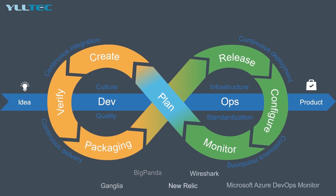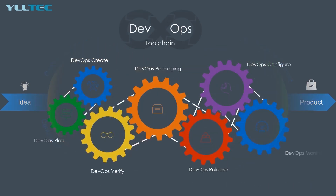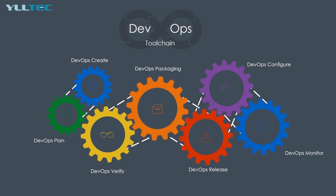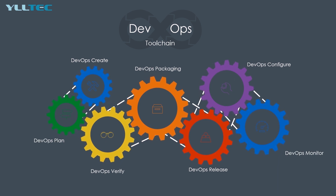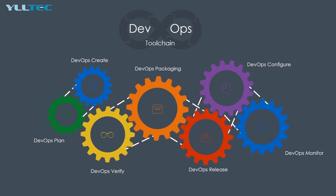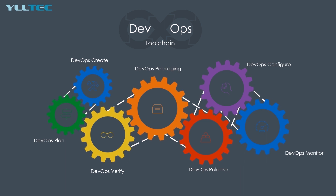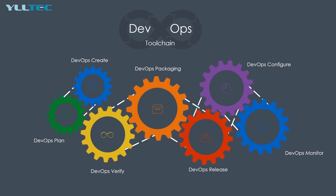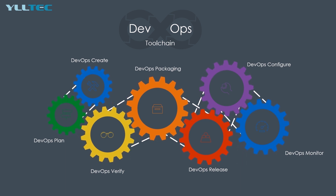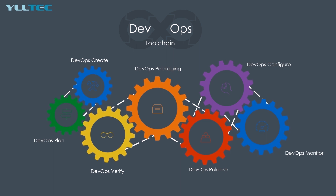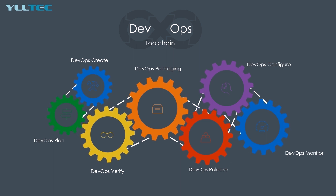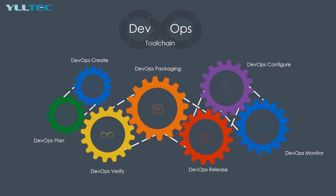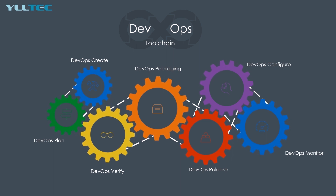Now we have come full circle. Our idea is now a finished product using the DevOps toolchain. The DevOps toolchain really consists of lots of different tools and technologies covering the areas of DevOps planning, create, verify, packaging, release, configure, and monitor.